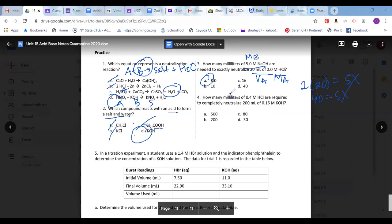And then the next one is the same thing. How many milliliters, this is VA, MA are required to completely neutralize that. So 0.4 times X equals 0.16 times 200. And I got 80.